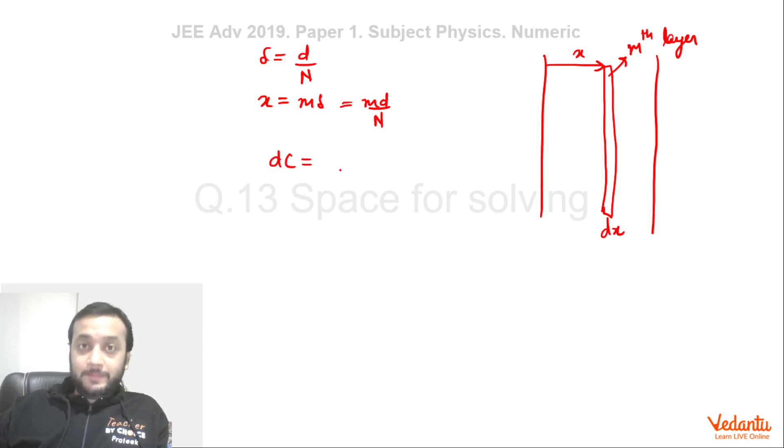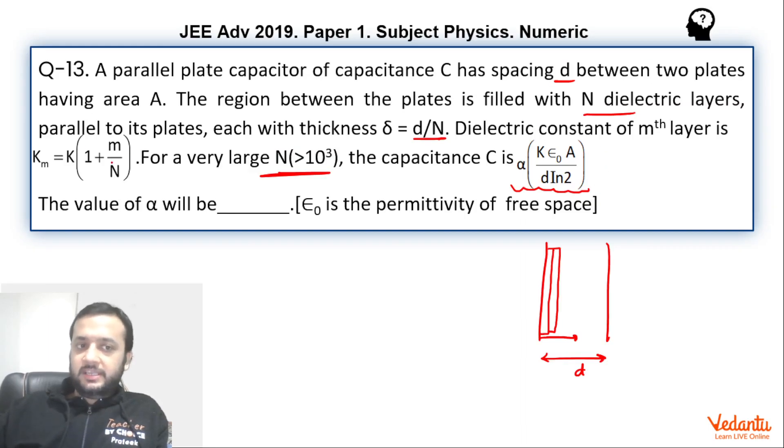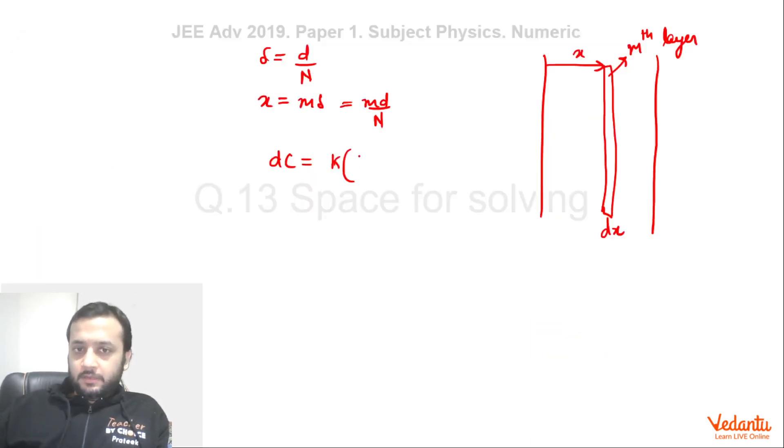Now, if I ask you what is the capacitance of this layer, you will say dC equals ε₀A/d—sorry, Kε₀A/d, where K is the dielectric constant of this layer, which is K(1 + m/N). So dC = K(1 + m/N)ε₀A/dx, where dx is the actual thickness.